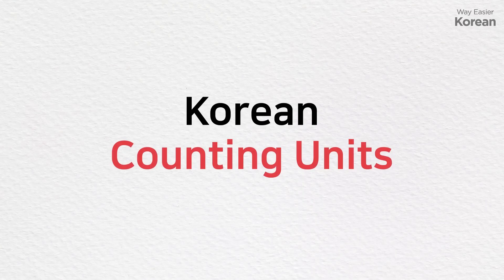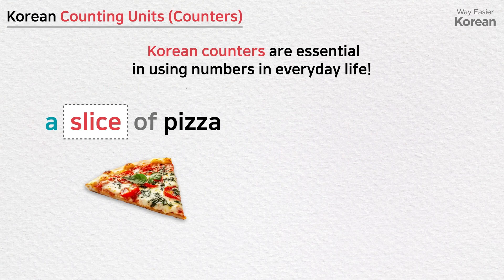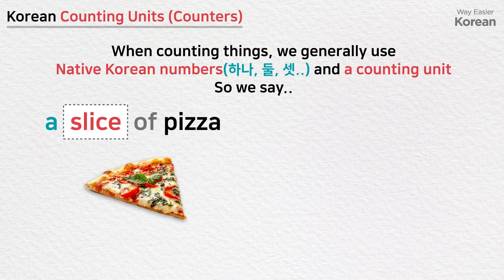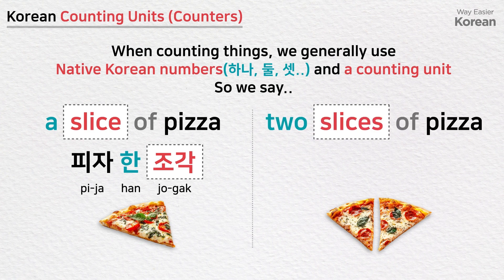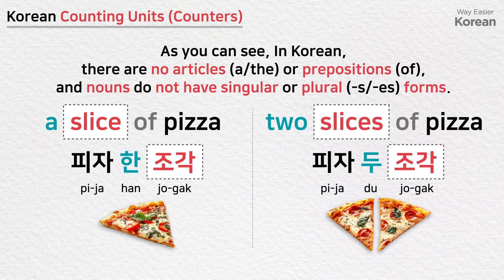Korean Counting Units — Counters. Korean counters are essential in using numbers in everyday life. When counting things, we generally use native Korean numbers 하나, 둘, 셋 and a counting unit. So we say: a slice of pizza — 피자 한 조각; two slices of pizza — 피자 두 조각. As you can see, in Korean there are no articles or prepositions, and nouns do not have singular or plural forms.